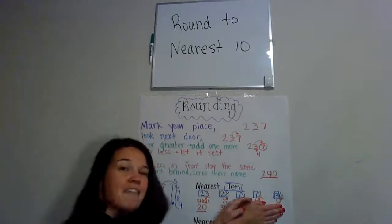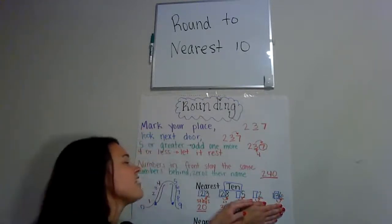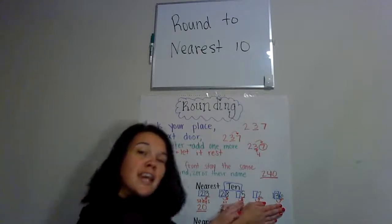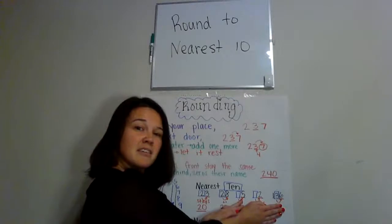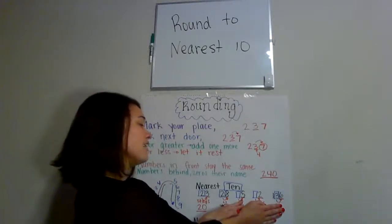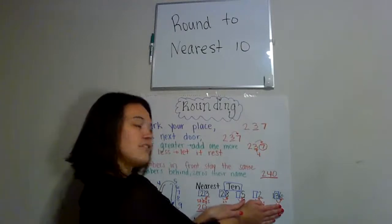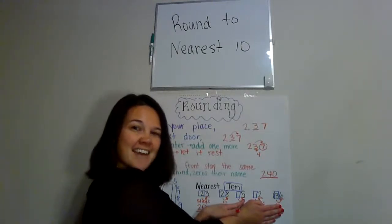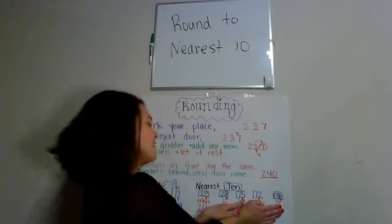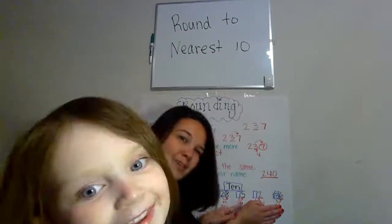Now we're trying to be tricky. So five — it only has one digit. That five is in the ones place. So we're still going to look at the tens place. Find the place, look next door. Is that five or bigger? Yes. So we're going to add one more. Five rounds up to 10.